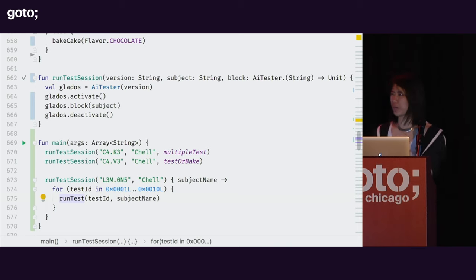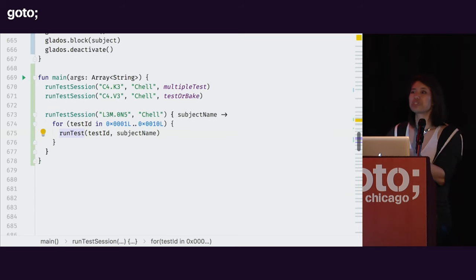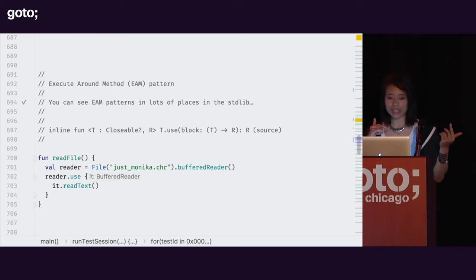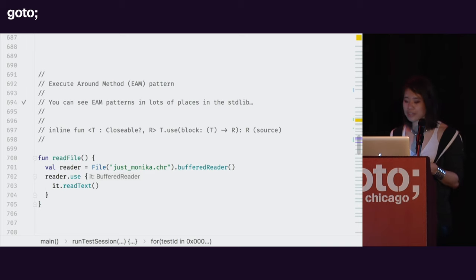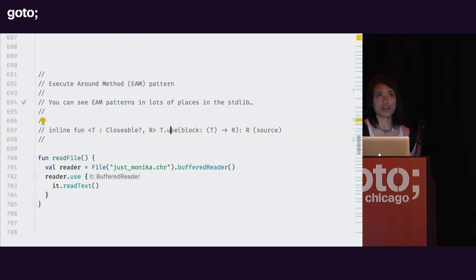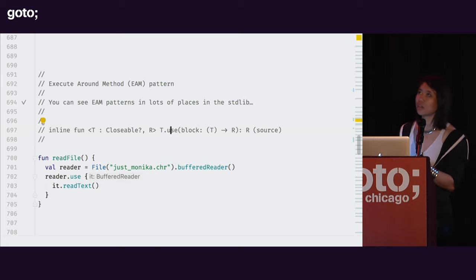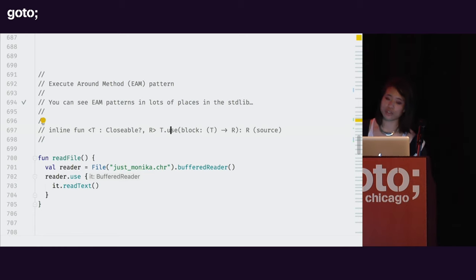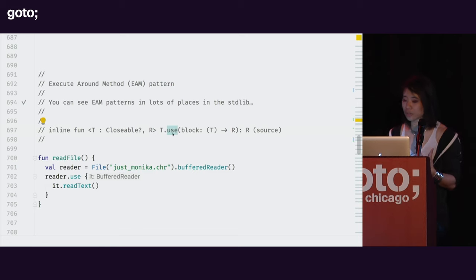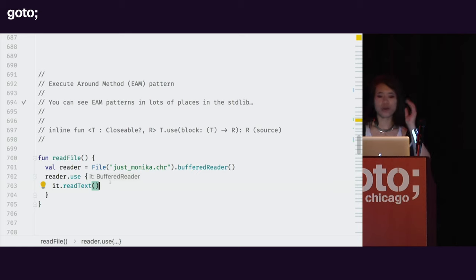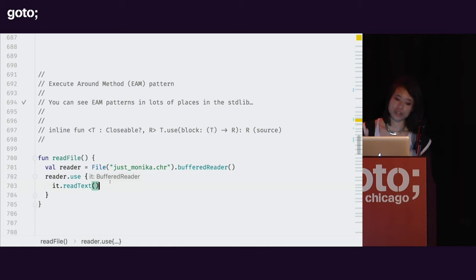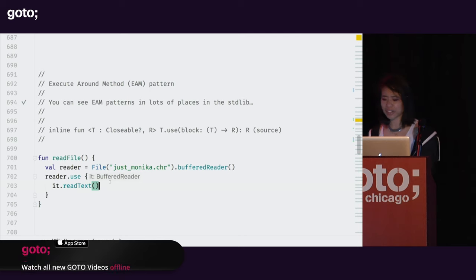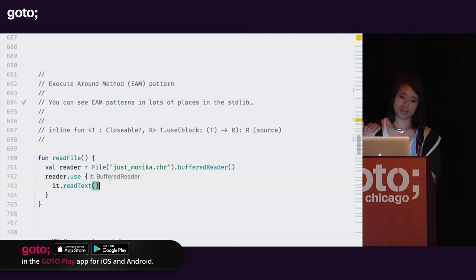We can make it more readable and more to the point — just concerned with what the actual thing is doing rather than the extra stuff. This is called the execute-around method pattern — something I learned from the awesome Venkat Subramaniam, and you can see it in a lot of places in the standard library. If you've ever used try-with-resources in Java when working with input-output streams — you have to open the stream, close it, handle close exceptions — a lot of that is abstracted away. Kotlin doesn't have try-with-resources as a construct, but it is a function in the standard library called 'use'. All that stuff with opening and closing the file gets extracted away; you just focus on what you want to do with the file.